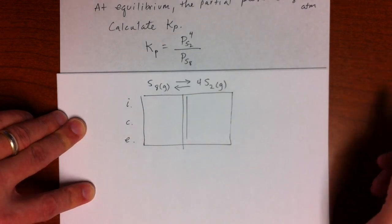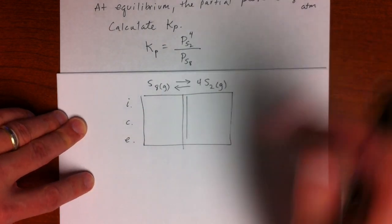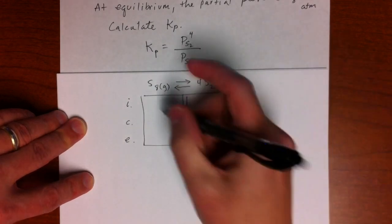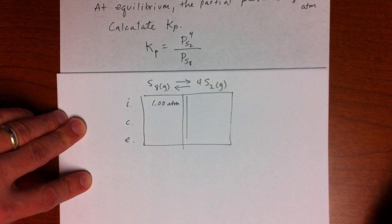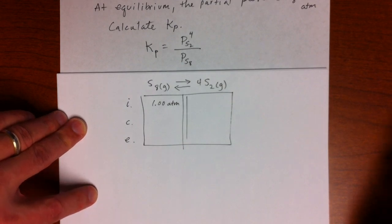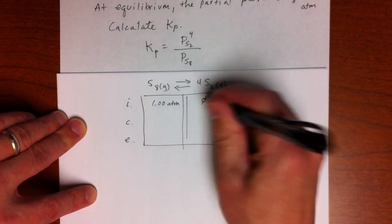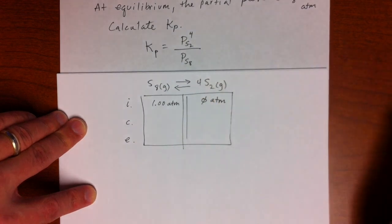Okay, now it said an initial pressure of 1.00 atmospheres from S8. It says S8 was placed in a container, otherwise empty. So also, it implies that there's no S2 in here, so that's zero atmospheres.